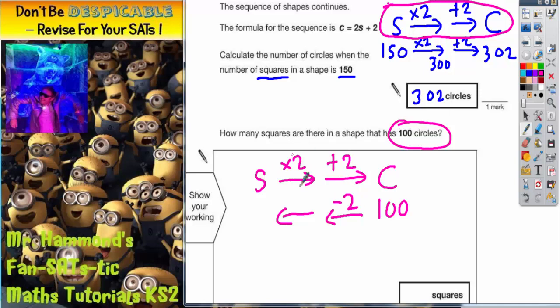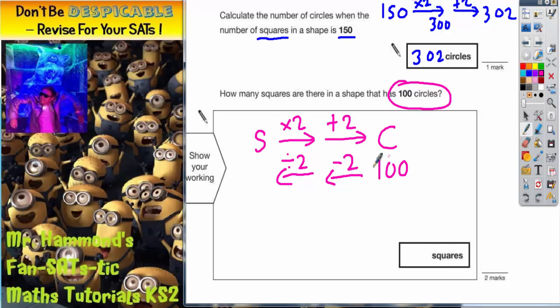To undo this multiply by two, we're going to do the opposite, which is divide by two. Now all we've got to do now is to actually work that through. So we're starting with 100 and we're working backwards. So 100 subtract two is 98.